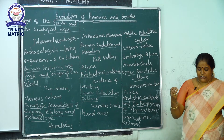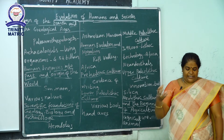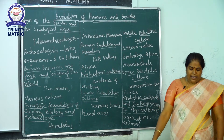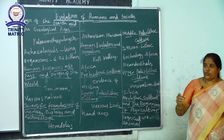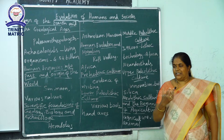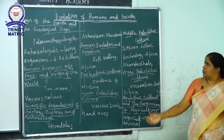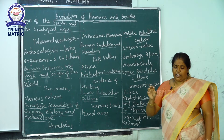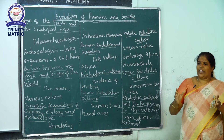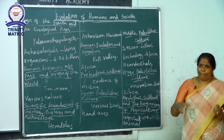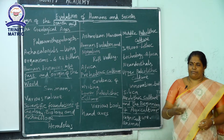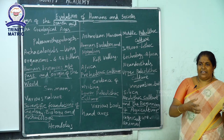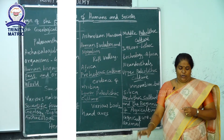Bronze vessels were stylishly finished and decorated with animals and birds drawings. Bronze mirrors and bronze bells were also used, the bells being used for prayer to god. These are the evidences for the evolution of humans and society in the prehistoric period.